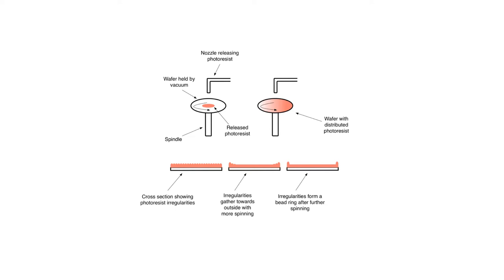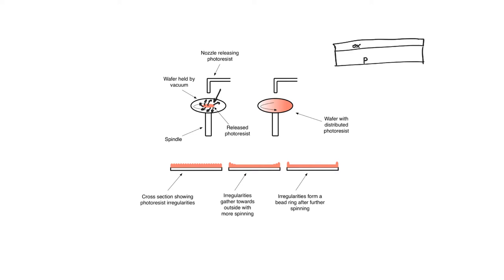The photoresist is applied as a liquid on the wafer, and then the wafer is rotated. As the wafer rotates, the photoresist starts to spread outward due to centripetal force, towards the outer parts of the wafer. Eventually we achieve full coverage, and the goal is to have a regular, even coverage: a substrate, a layer of oxide on top, and then a layer of photoresist on top of the oxide.